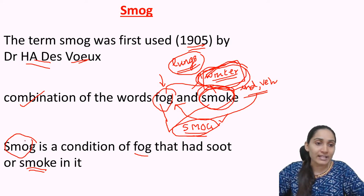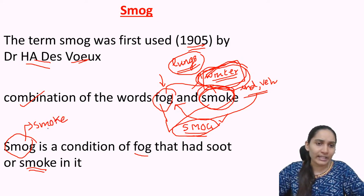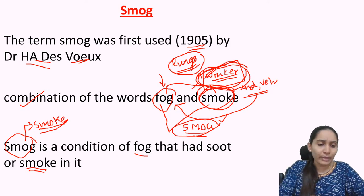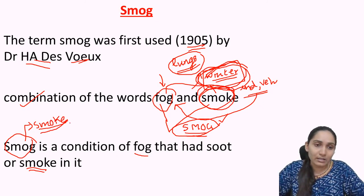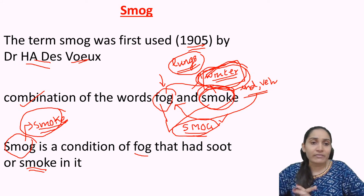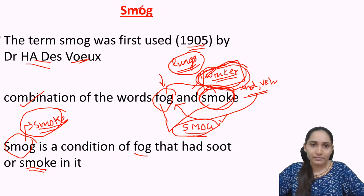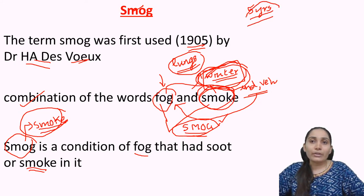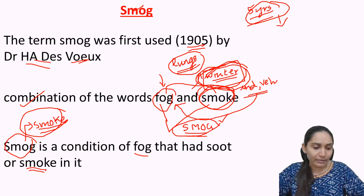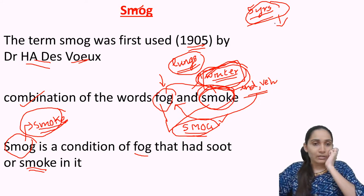When smoke from industrial pollution or high vehicular emissions combines with local fog, it creates smog. This is very dangerous especially for children under five years, because their immune system is still developing. If they breathe this impure air, there are high chances of getting lung-related diseases.